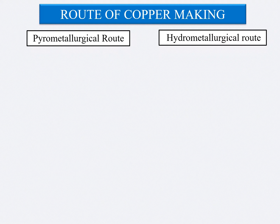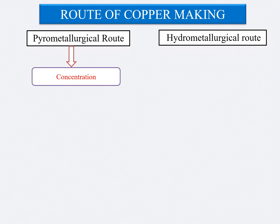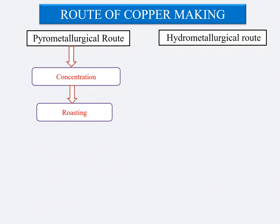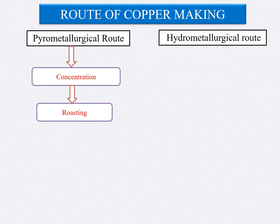The extraction of copper by the pyrometallurgical route is the conventional route. The first step is concentration, in which copper is concentrated using the froth flotation process — typically 15 to 35 percent copper is found in the concentrate. After concentration, roasting is done on the copper concentrate; the objective of roasting is to partially oxidize the iron sulfides for removal in the smelting stage and to burn off part of the sulfur. The matte — a varying mixture of copper and iron sulfides such as Cu₂S and FeS — is produced during smelting in a reverberatory furnace to eliminate the gangue material as slag.